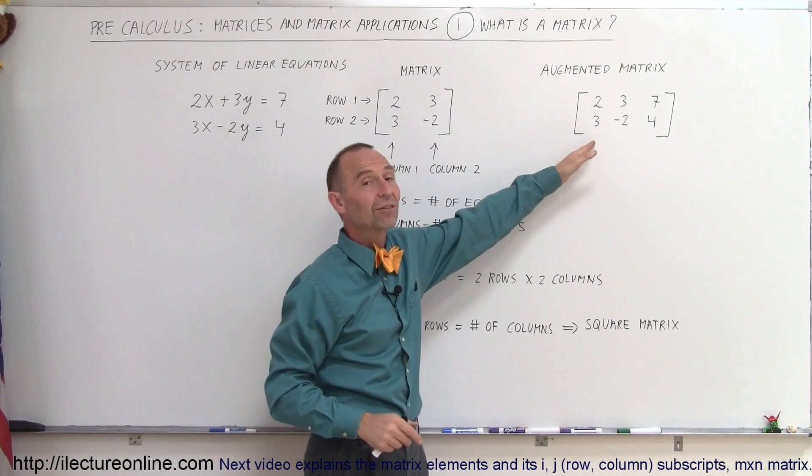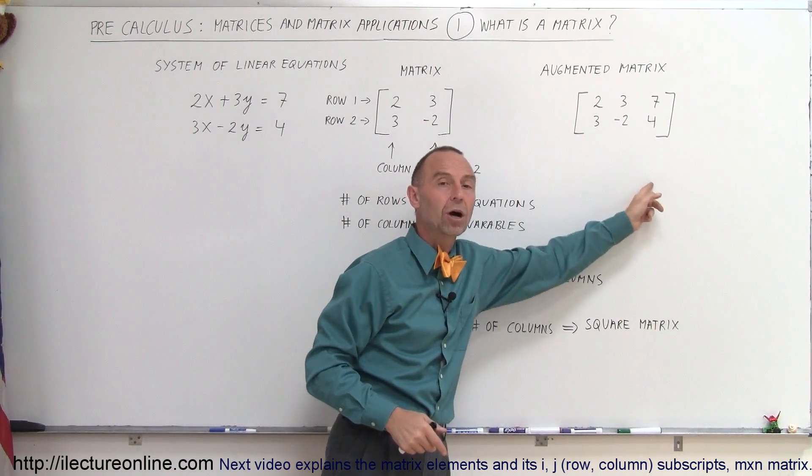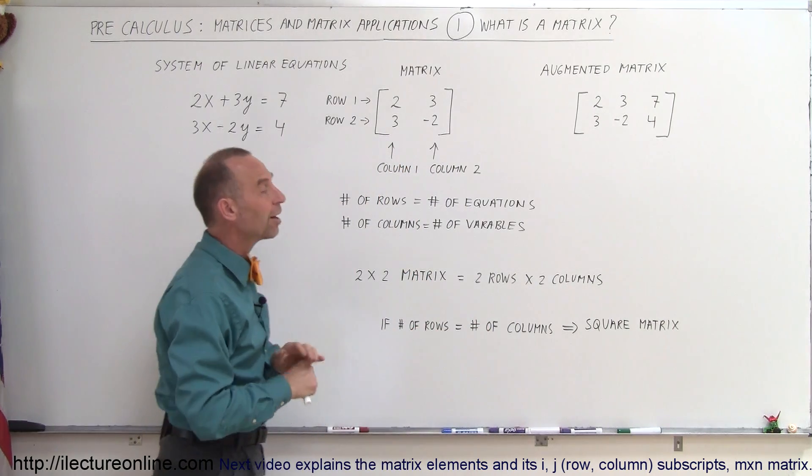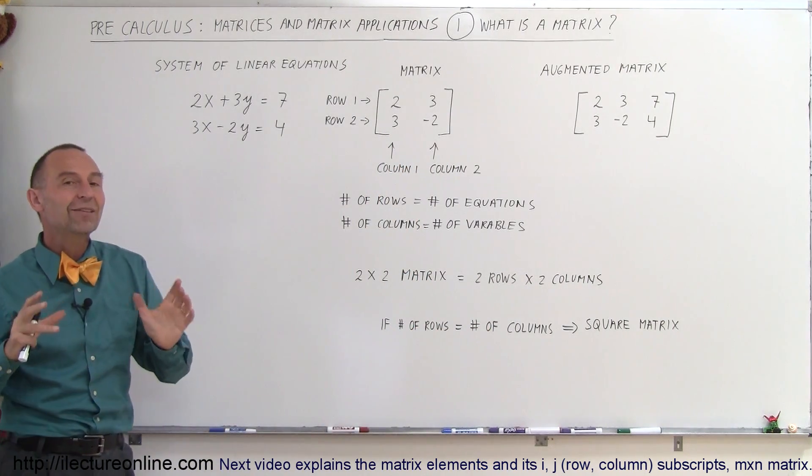This would not be an example of a square matrix because it has two rows and three columns. It's called an augmented matrix. So those are the basics of matrices.